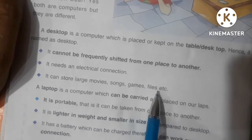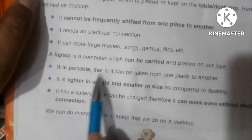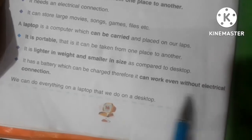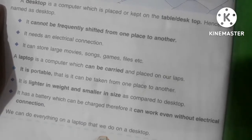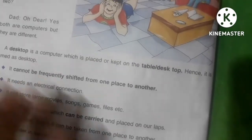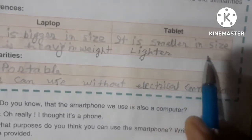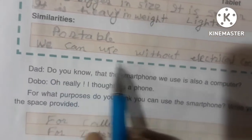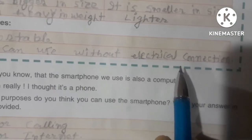A laptop is a computer which can be carried and placed on our laps. It is portable, lighter in weight, and smaller in size. It can work even without an electrical connection. A tablet is smaller in size and lighter in weight compared to a laptop. Similar to a laptop, it is portable and can be used without an electrical connection if charged.